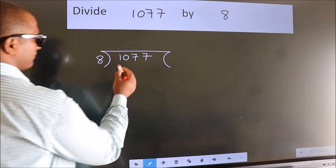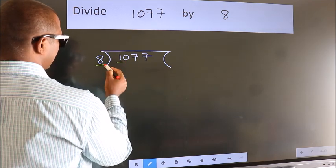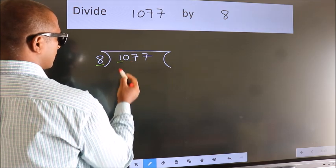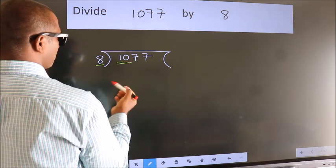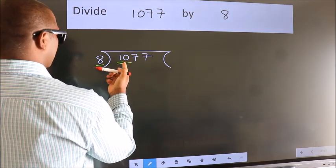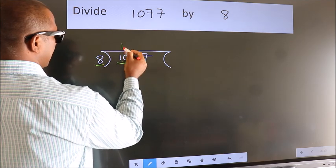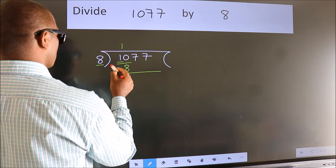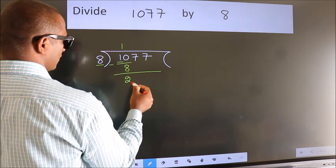Here we have 1, here 8. 1 smaller than 8, so we should take 2 numbers, 10. A number close to 10 in 8 table is 8 once, 8. Now, we should subtract. We get 2.